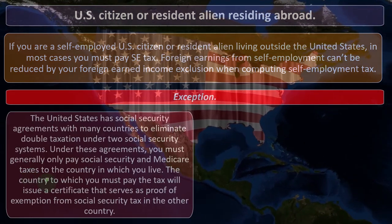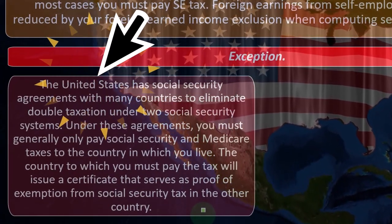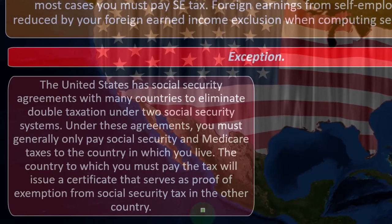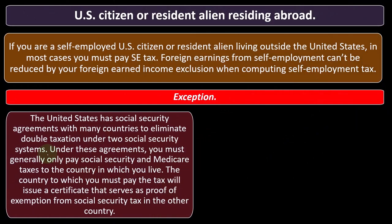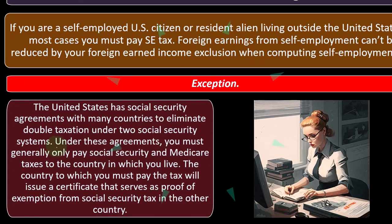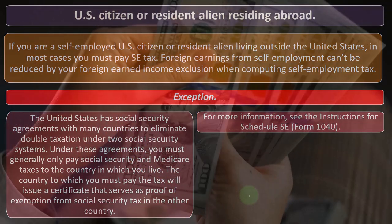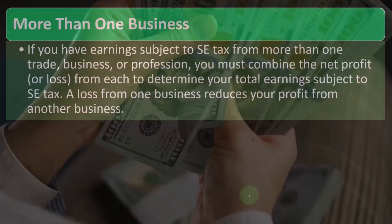The United States has social security agreements — also known as totalization agreements — with many countries to eliminate double taxation under two social security systems. When two countries each have their own social security system, the whole idea is that you pay in and receive benefits from that system. Under these agreements, you must generally only pay social security and Medicare taxes to the country in which you live. The country to which you pay will issue a certificate that serves as proof of exception from social security tax in the other country.